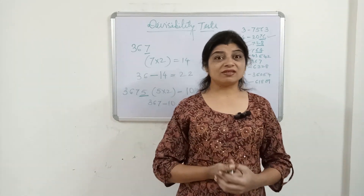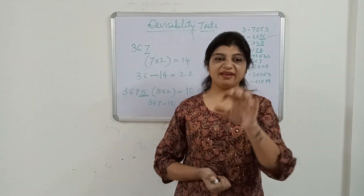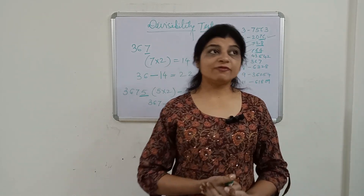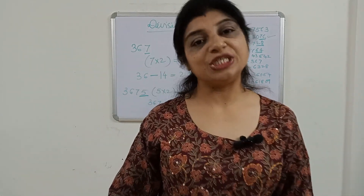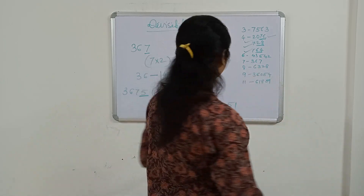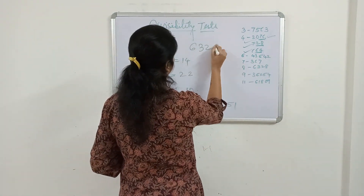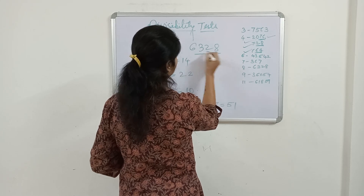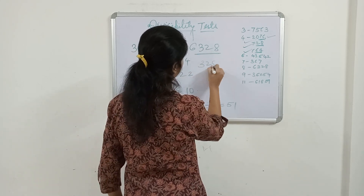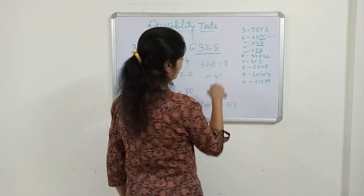Divisibility of 8 states that a number is divisible by 8 then and then only when the number formed by its last three digits is divisible by 8. For example, take the number 6328 — the last three digits form 328, and 328 is divisible by 8.